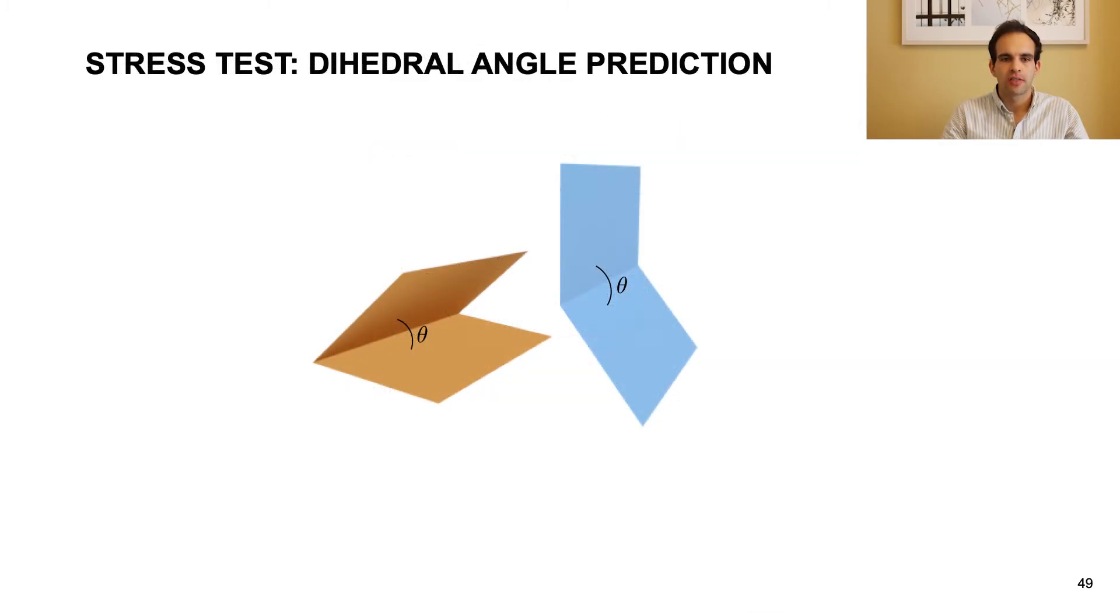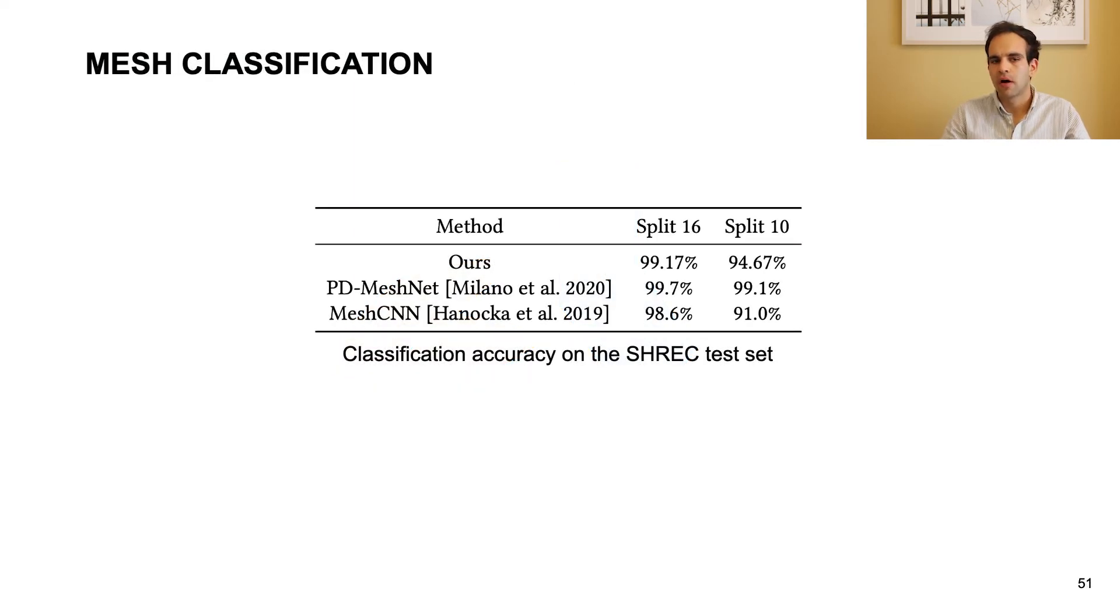To evaluate our model, we start with a stress test. We take a triangle mesh of a flat sheet and generate a dataset by creasing it at a random angle down the center. Our learning task is then to predict the dihedral angle along the crease. In this experiment, we do not provide our model with vertex normals. Only vertex positions are used. Note that all the meshes in this dataset are isometric. The dihedral angle is purely an extrinsic property. Hence, the standard Laplacian would necessarily fail at this task, since it is only aware of intrinsic structure. After just 15 minutes of training, our model learns to predict the angle with an error of less than 1 degree. This demonstrates that we are able to learn a custom operator suited for the task at hand, with properties distinct from the Laplacian. We then evaluate our model on the standard 30-class Shrek classification task. Our model is competitive with state-of-the-art on both the 16-4 and 10-10 train test splits.